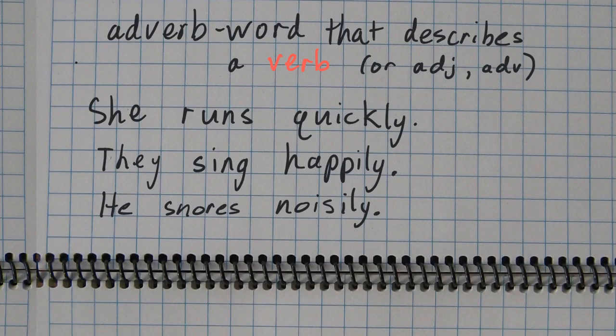Alright, so here are three very simple sentences. I'm going to underline the verb in each one. She runs quickly. Your verb is runs. They sing happily. Sing is your verb. He snores noisily.